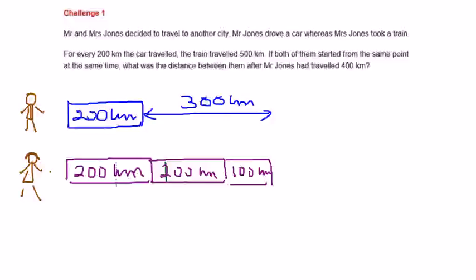Hi, welcome to challenge 1. Mr. and Mrs. Jones decided to travel to another city. Mr. Jones drove a car whereas Mrs. Jones took a train.